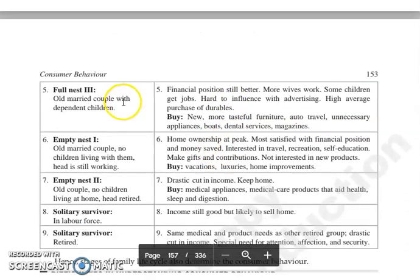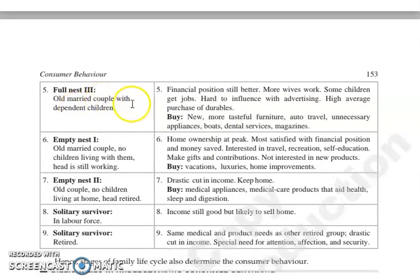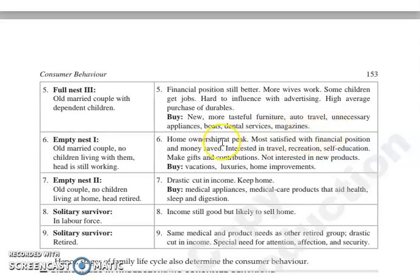Then Full Nest 3, where an older married couple is with dependent children. They will spend on new and more tasteful furniture, auto travel, unnecessary appliances, boats, dental services, and magazines.